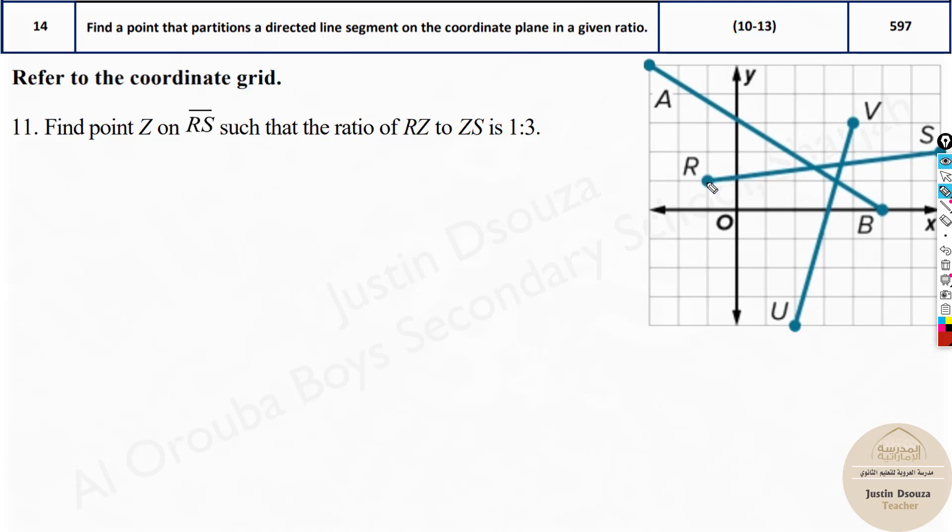So here we have RS, that is this line. And we need to find a point Z such that the ratio is 1 is to 3. So one part, RZ will be one part and this will be three parts, somewhere over there. Now I hope you remember the formula. It is M is to N, the second ratio.